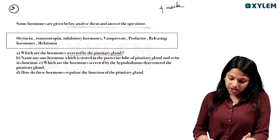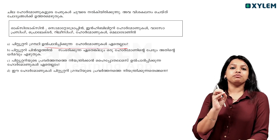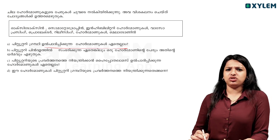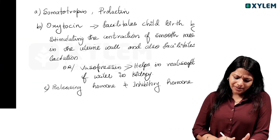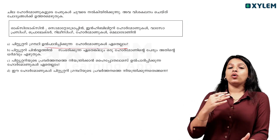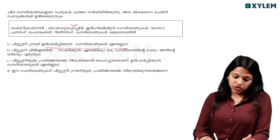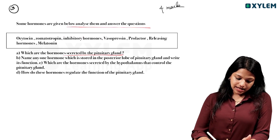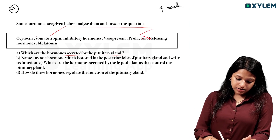Each hormone is secreted by the pituitary gland. How do the pituitary gland hormones get released? The pituitary gland hormones include prolactin and somatotropin. We are going to identify prolactin and somatotropin as hormones released by the pituitary gland.